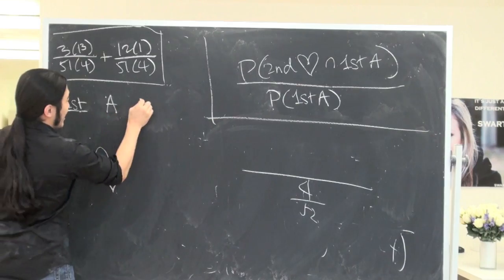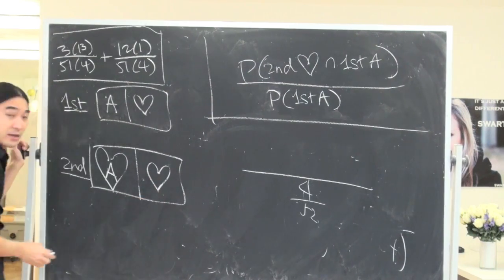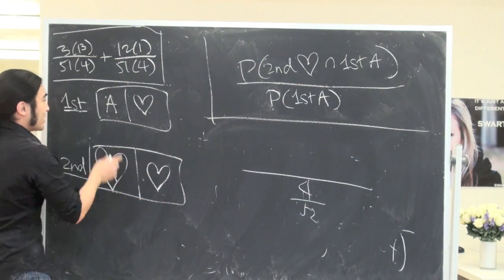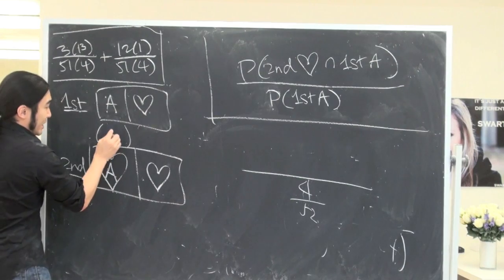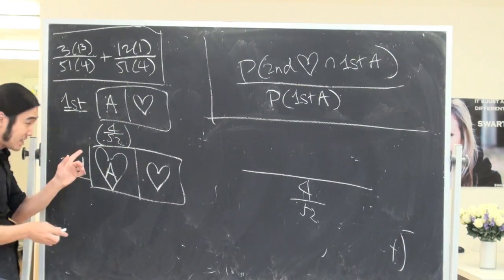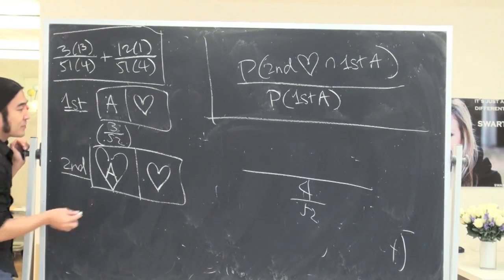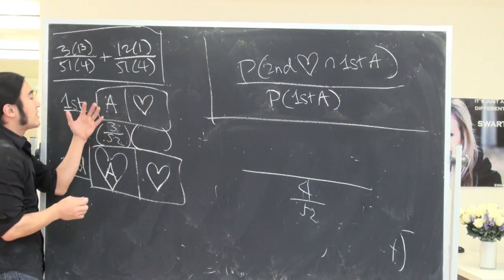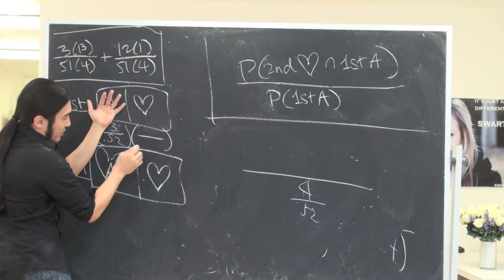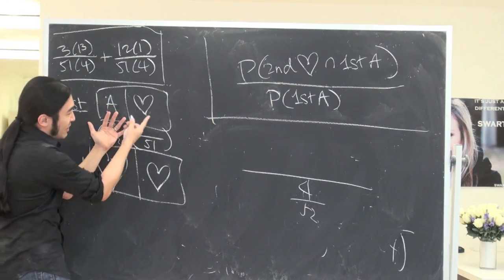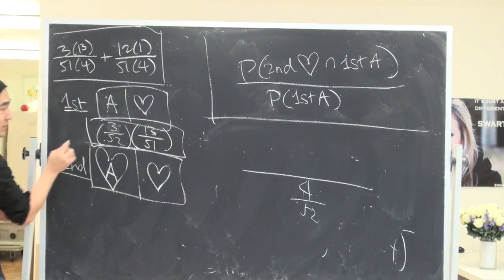Let's compute this. The probability that you end up getting an ace is four out of 52. But the probability you get an ace that doesn't happen to be a heart, that's only three out of 52. And then after that, given that you know this is what's going on with the first card, what are the odds the second card would be a heart? There's 51 cards left. Because we didn't use a heart here, we have all 13 hearts left over.